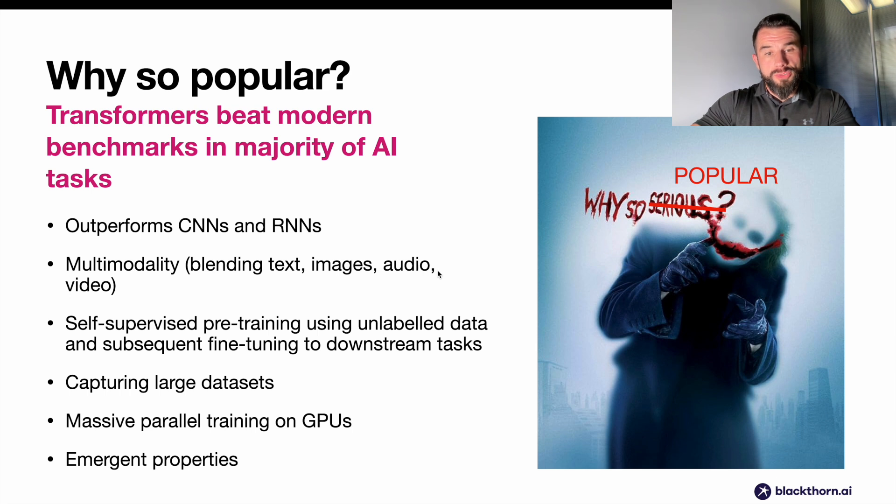Transformer-based architectures are so popular because they beat modern benchmarks in the majority of AI tasks. They also outperform CNNs and RNNs in the majority of tasks such as classification, segmentation, object detection, and others. They have the property of multi-modality, which is the ability of these models to blend text, audio, video, and more in one model. So you don't need separate models and inputs for different types of data. You can throw everything into one and it will output embeddings.